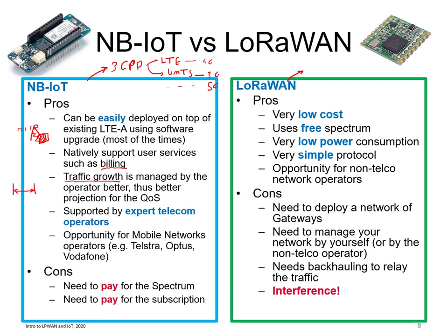This is a significant opportunity for operators in Australia such as Telstra, Optus, and Vodafone. The drawbacks: you need to pay for spectrum if adding additional spectrum, though most operators are not adding new spectrum — instead dedicating part of existing spectrum to NB-IoT. From the user perspective, you also need to pay for a subscription.